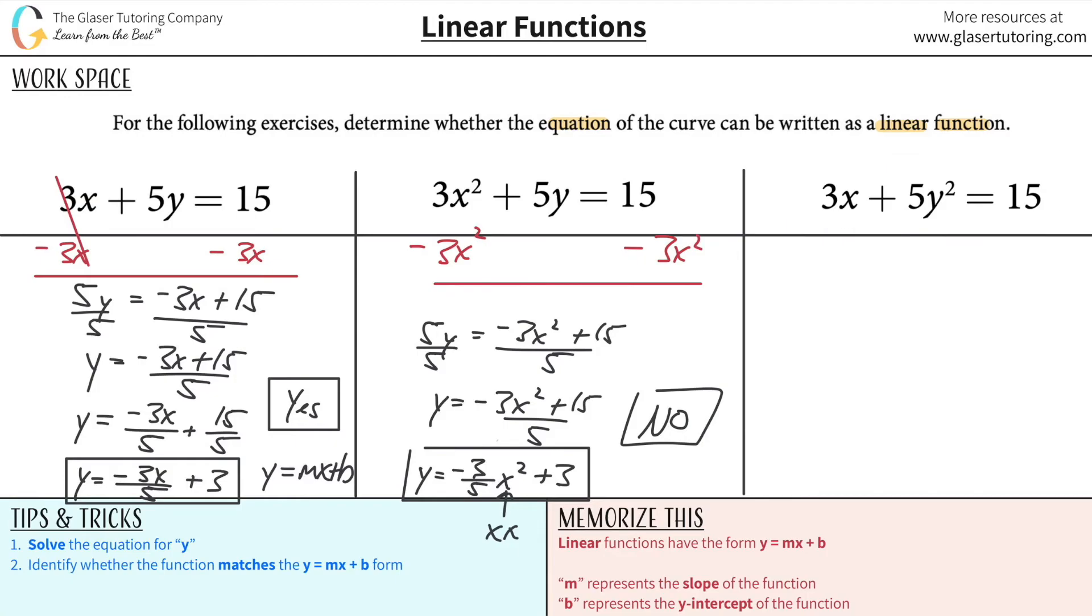So next thing is we got to take this function and do the same thing. Get it down to y equals something. Similar procedure. Subtract the 3x across both sides. You might already be seeing it, which is good. If you're seeing this already, that's definitely identifying some patterns, which is fantastic, especially in math, because math is just a whole bunch of patterns. Divide out the 5 from both sides now because we got to get y by itself. We have y squared equals negative 3x plus 15 all over 5.